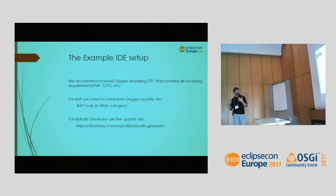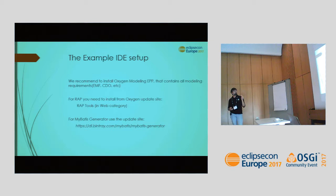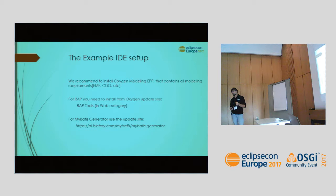For running this example, we recommend installing the latest Eclipse Oxygen Modeling Package, because it contains everything you need: EMF, CDO, Parsley, and so on. If you want to use RAP, you'll need to install the RAP tools, found in the Oxygen update site under the Web category. For the MyBatis generator, here is the update site reference — you can also find it on the Eclipse Marketplace.